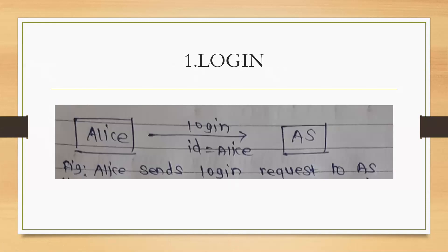In the login phase, Alice is sitting at any arbitrary public workstation and wants to access some services. First, she simply writes her login name or login ID as 'Alice' and it is transmitted to the authentication server. This is the first action: Alice sends her login request to the authentication server.